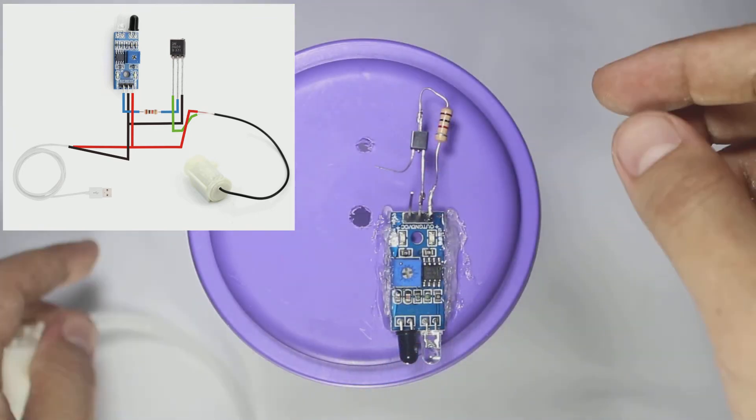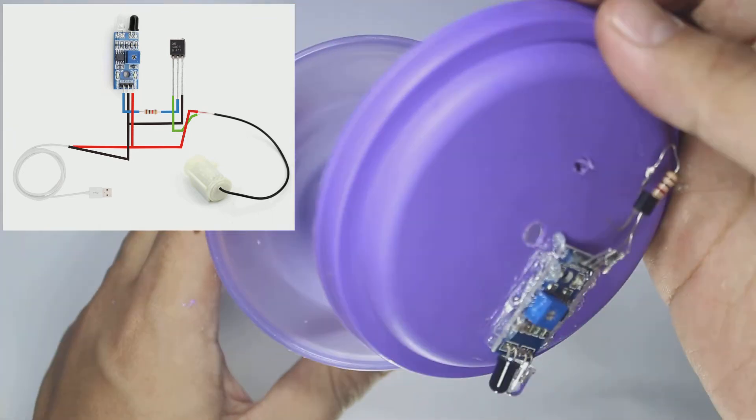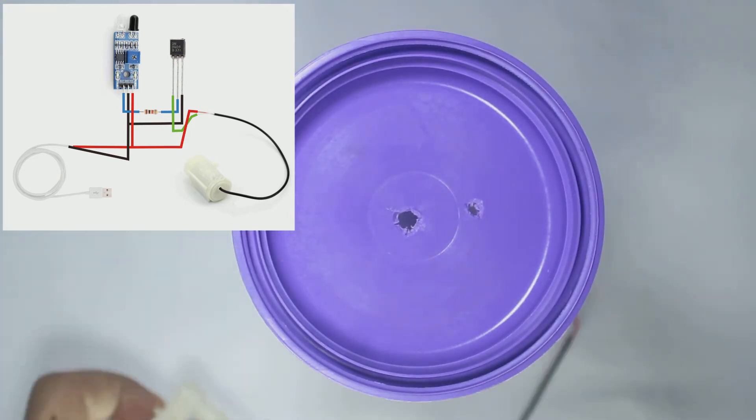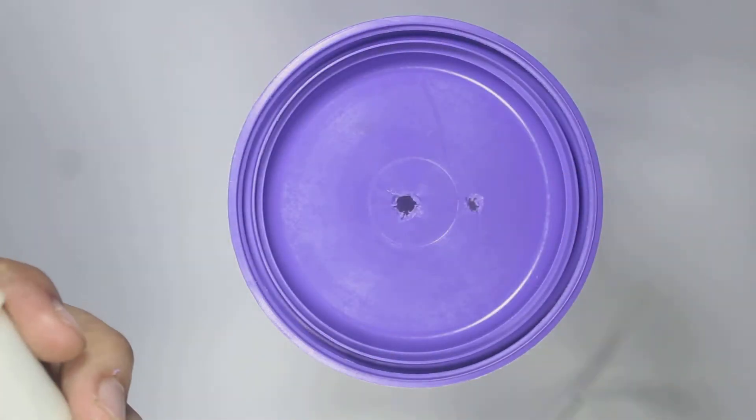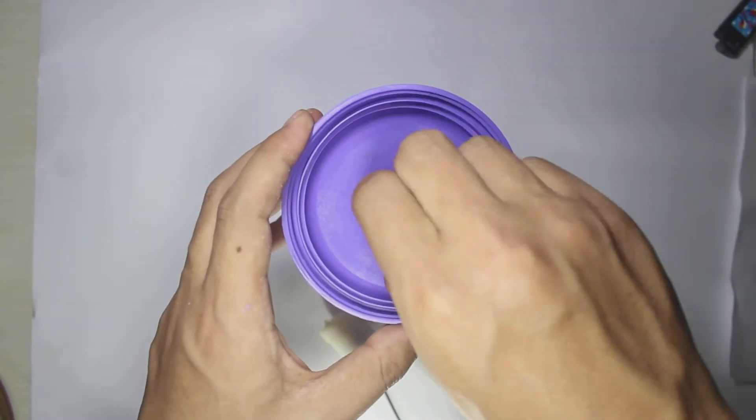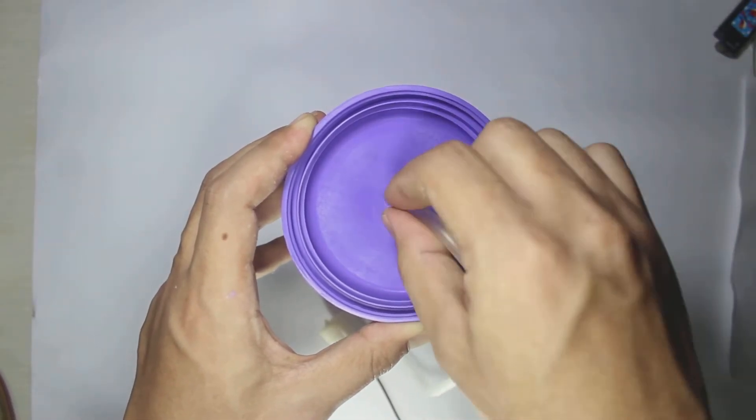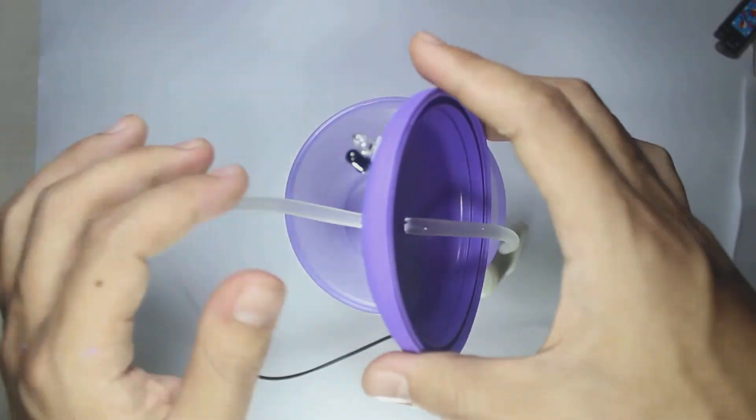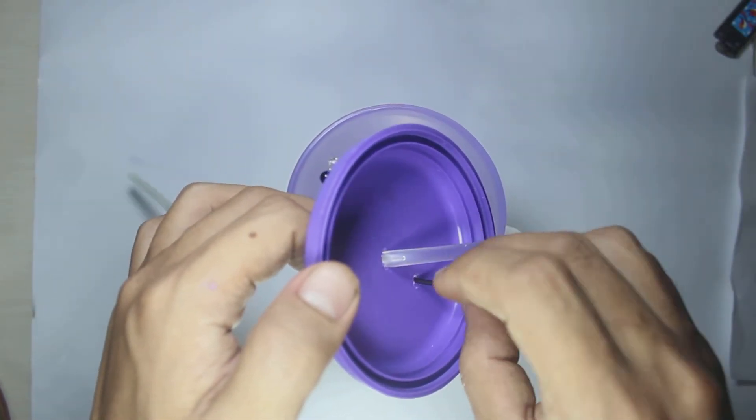Before we continue to solder the DC pump, we need to put the pump inside the water container. So we should put the flexible water tubing pipe through the roof of water container and so with the DC pump wires.